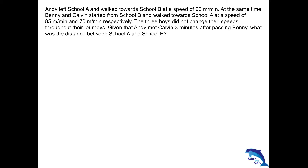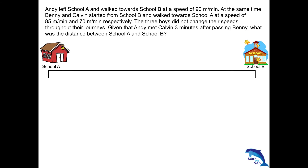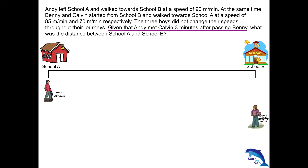To begin with, let's start off by drawing the distance line and labelling your destinations, school A and school B. We know that Andy started from school A and for Benny and Calvin, they started from school B. We were told that Andy met Calvin three minutes after passing Benny.